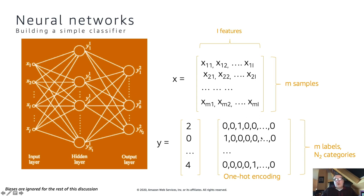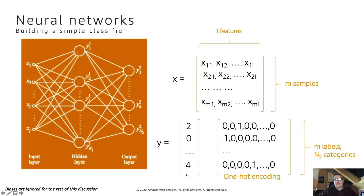One-hot encoding tells us how many dimensions we have in the problem. If we have 10 classes we need 10 output neurons. We can also see those zeros and ones as probabilities — we know 100% that x1 is category 2 and 0% for all other classes. This helps us understand the output of the network. This is the basic theory: data samples here, labels here, encode them.